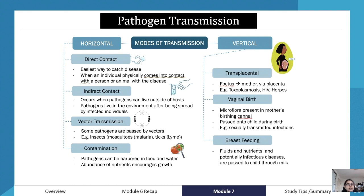Indirect contact occurs when pathogens can live outside of host cells — they survive in the environment after being spread. For example, with influenza the pathogens are in the air after someone sneezes or coughs, and someone can easily contract the disease that way.